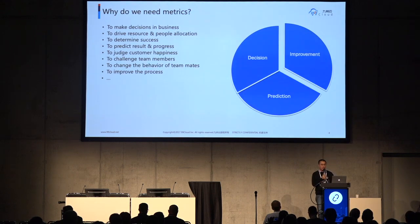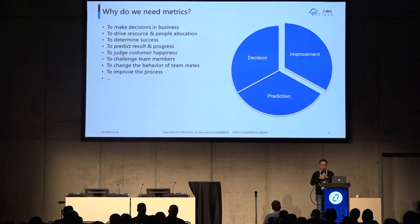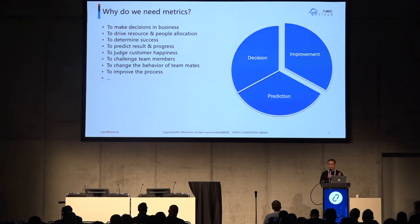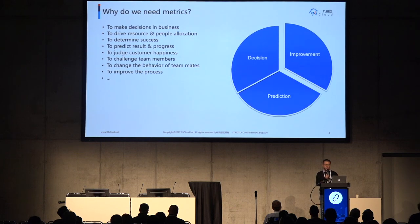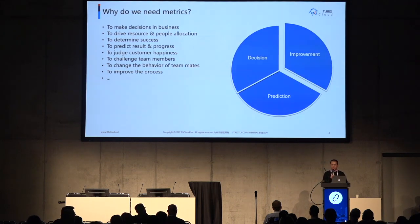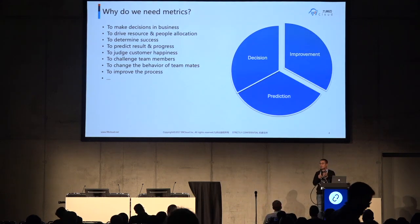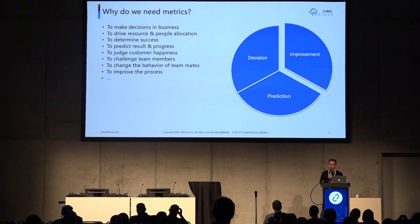We can also categorize Agile metrics across several phases in a development cycle. First, metrics can help us in iteration planning — making clear the priority and size of features based on history. Second, they can help us with iteration tracking. Third, they can help us motivate and improve the team and team members.